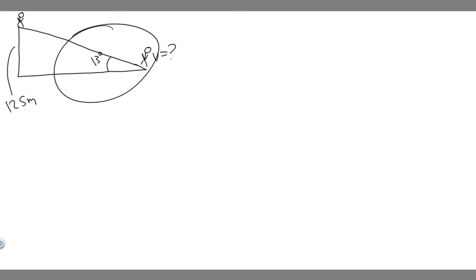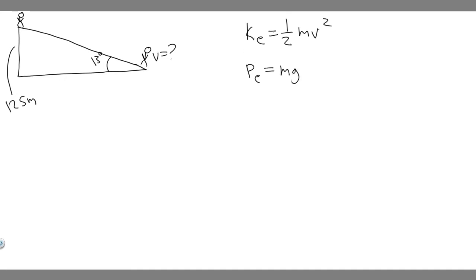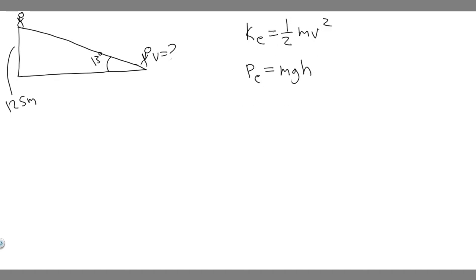Now what we want to do is write down the formulas for kinetic energy and potential energy — you're going to need to know these to solve this. The formula for kinetic energy is one-half mv squared, and for potential energy it's mgh. We're going to use these formulas to solve it.